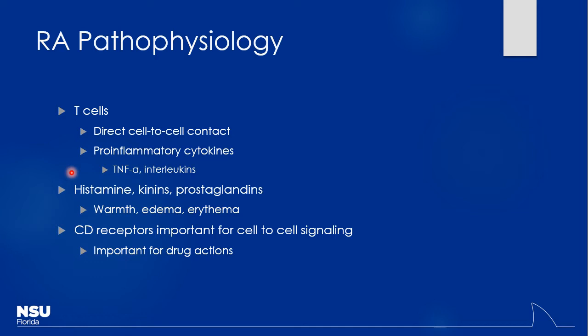We'll look at where biologics fit into therapy versus non-biologics and earlier therapies. Can you always get away with just using one drug for these patients? A lot of times you need combination therapy. We'll look at what appropriate combinations are between biologic and non-biologic DMARDs. We can even shoot for some CD receptors responsible for cell-to-cell signaling to interrupt that inflammatory cascade.